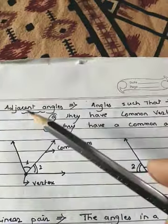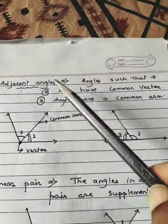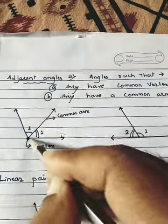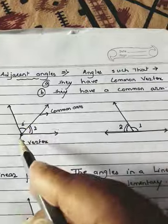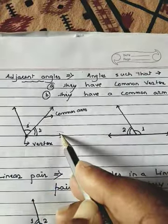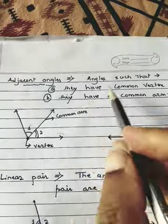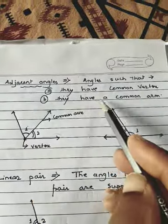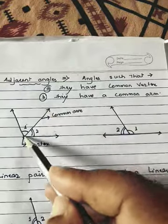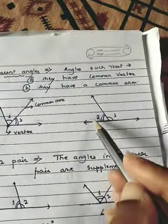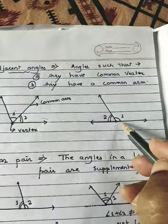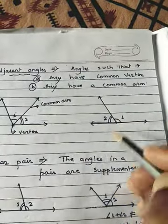Number six: Adjacent Angle. Adjacent angles are angles that have a common vertex and a common arm. See this angle one and angle two — they share a common vertex and a common arm. This arm is shared with angle one and also with angle two. So adjacent angles always have a common vertex and a common arm.